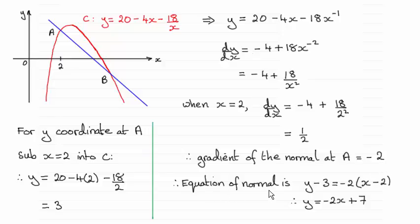And so the equation of the normal is going to be y minus y1. I've chosen y1 as being the 3 here equals m the gradient which is minus 2 times x minus x1. x1 being the x coordinate at A which is 2. And then just a question of expanding the bracket and adding 3 to both sides gives you y equals minus 2x plus 7. All right?